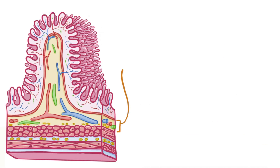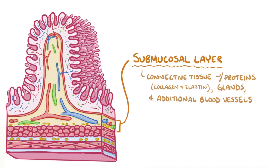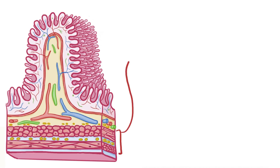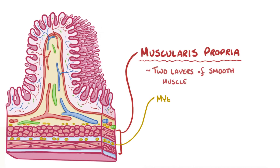Deep to this mucosal layer is the submucosal layer, which has connective tissue with proteins like collagen and elastin, as well as glands and additional blood vessels. The submucosal layer also has the Meissner plexus, which is part of the enteric nervous system. Below the submucosal layer is the muscularis propria, which is basically two layers of smooth muscle with the myenteric plexus, another part of the enteric nervous system, sandwiched between them.